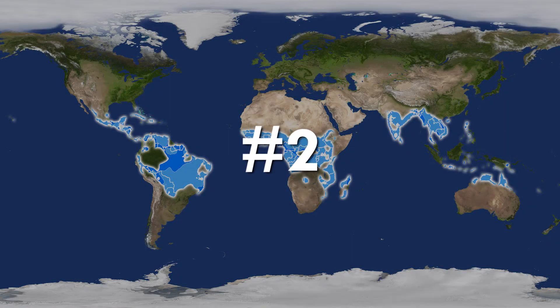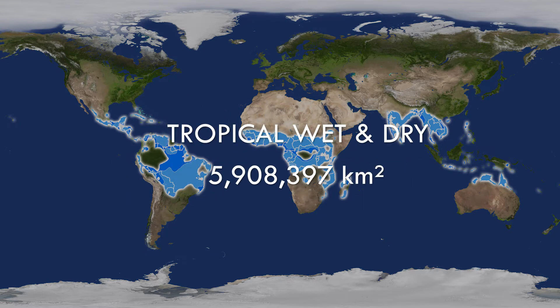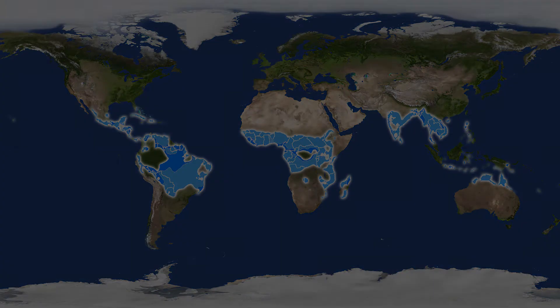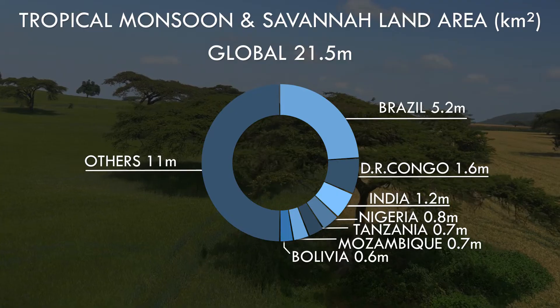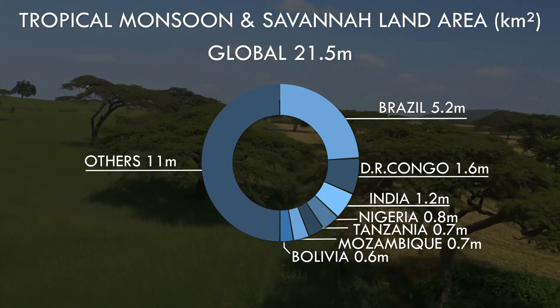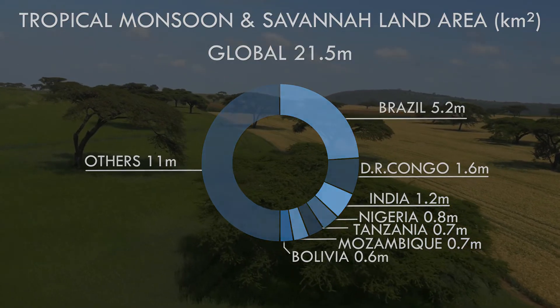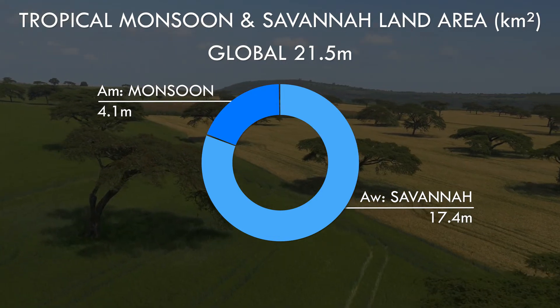Onto number two in our climate land areas list, and we are back in the tropics with the wet and dry seasonal climates – the tropical monsoon and tropical savannah. These lands dominate the tropics, making up almost 75% of land area in this region of Earth, with the tropical rainforest making up most of the remainder. Although the vast savannah of Brazil makes up almost a quarter of this climate's land area, the remainder is distributed across a very large number of countries, from central and South America, Africa and South East Asia. The savannah variant of more pronounced dry seasons dominates over the wetter monsoon form.